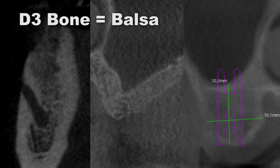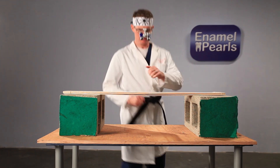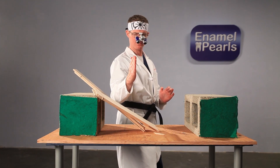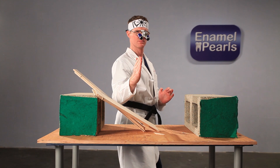D3 bone has the density of balsa wood. It's very soft and is very common in the posterior maxilla or engrafted bone. D3 bone is trabecular bone with a thin or non-existent cortical plate. Implant placement in D3 bone can be tricky because in soft bone the normal size osteotomy may be too large to engage the implant body. Various techniques are used to condense the bone instead of using drilling to create the implant osteotomy.